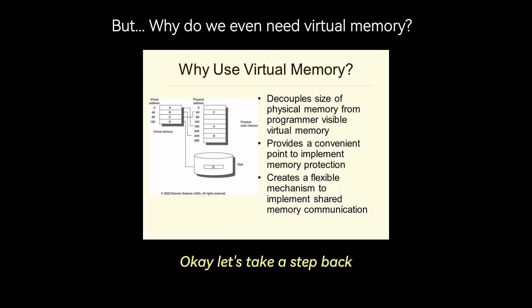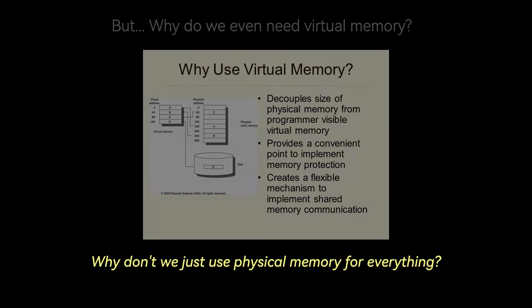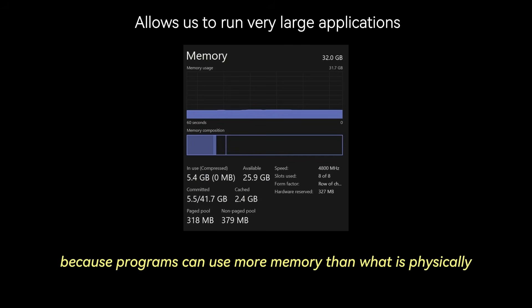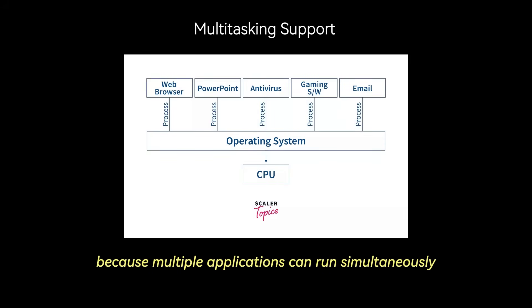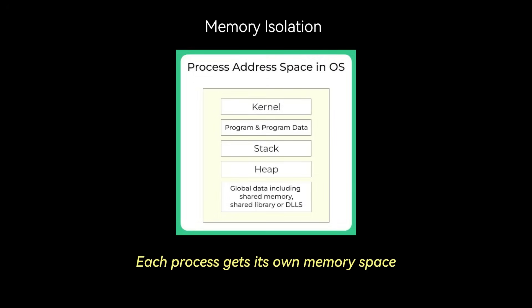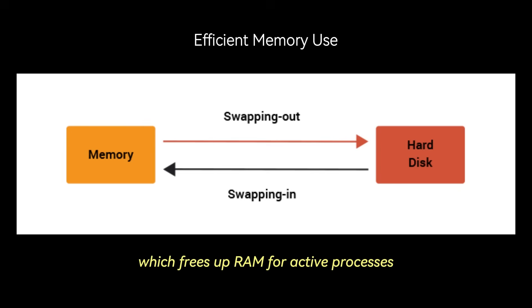Why do we even use virtual memory instead of just physical memory? First, it allows us to run very large applications, since programs can use more memory than what is physically available. There is also multitasking support, because multiple applications can run simultaneously without worrying about available RAM. An added benefit is memory isolation — each process gets its own memory space, preventing one program from interfering with another. Finally, you get efficient memory use, because unused memory sections can be swapped out to disk, freeing up RAM for active processes.